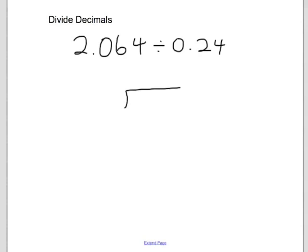We are able to take this problem, and remember the first number is called our dividend and always goes inside the bracket. So, 2.064. And our divisor goes outside the bracket, 0.24.